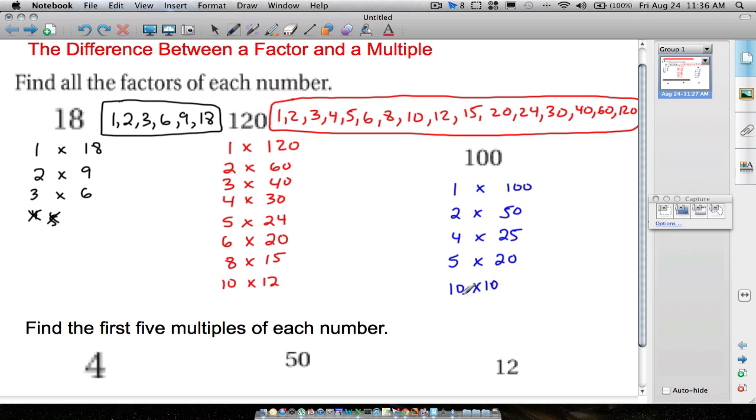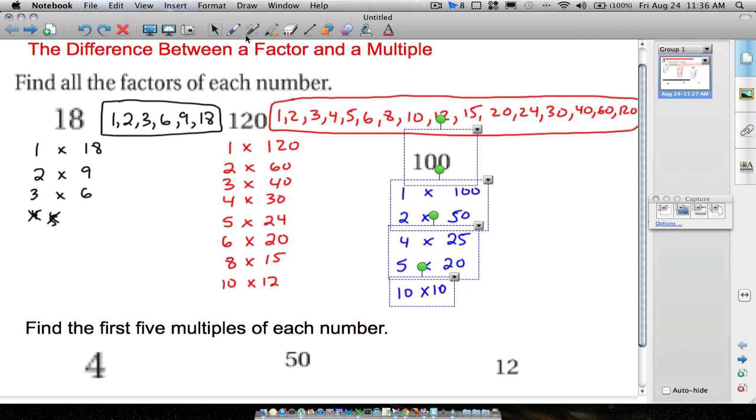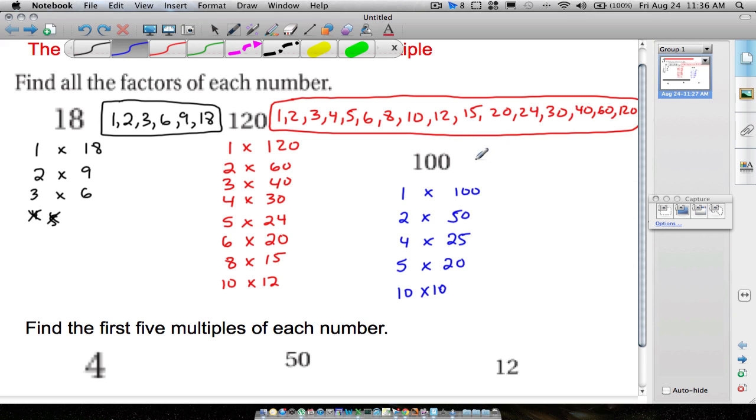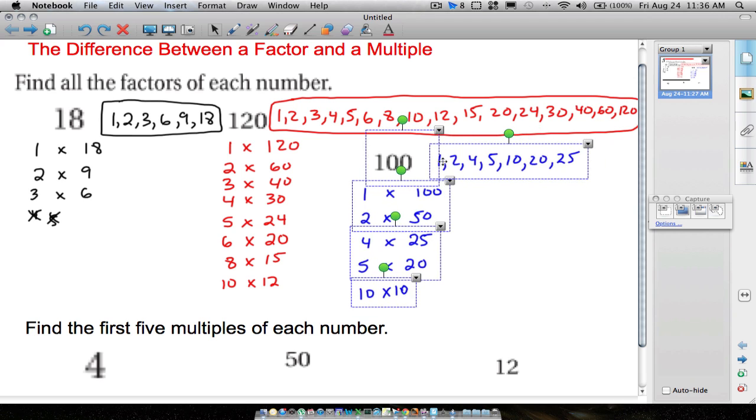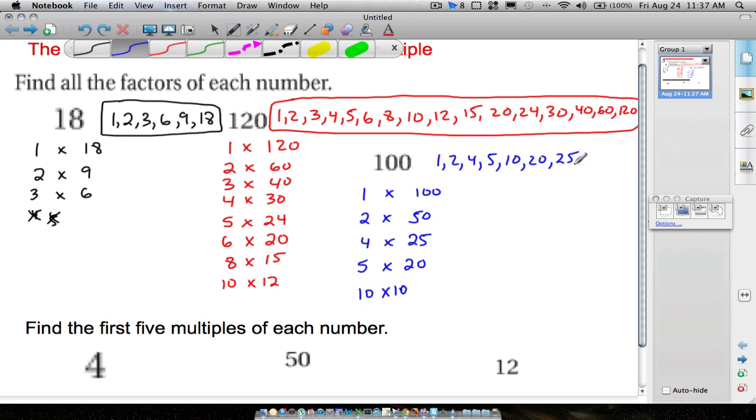So it's a good thing to note here. You don't want to list down the factor twice even though it does show up twice. So let's write our answer. The factors of 100 from smallest to biggest will be 1, 2, 4, 5, 10, 20, 25, and then we want to include the 50 and 100. So these are factors of 100.